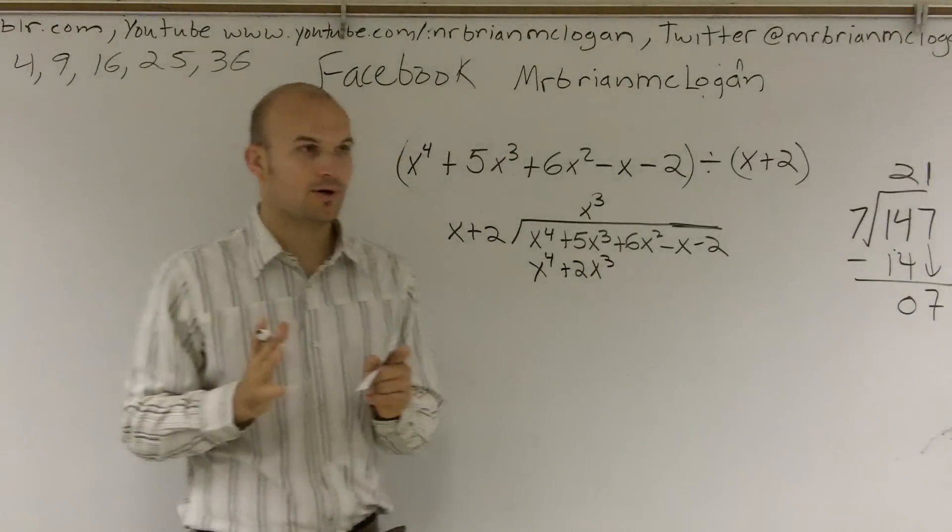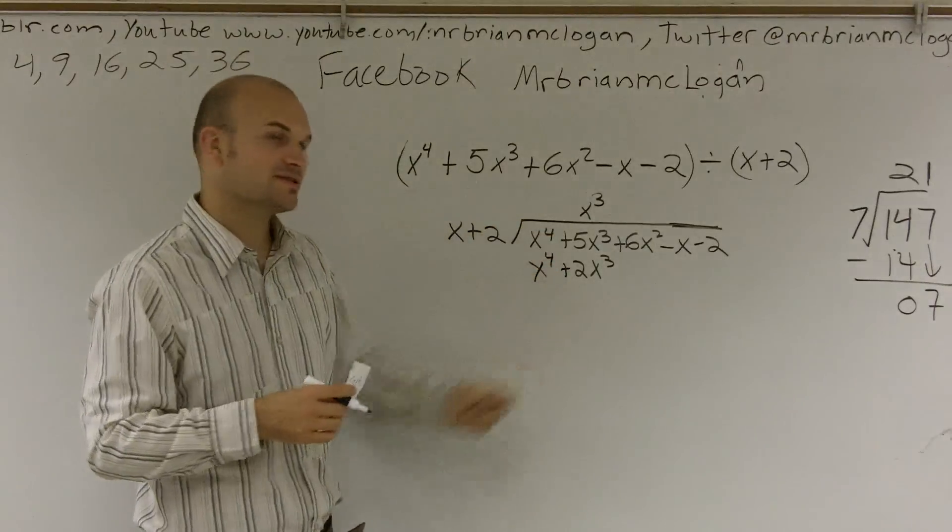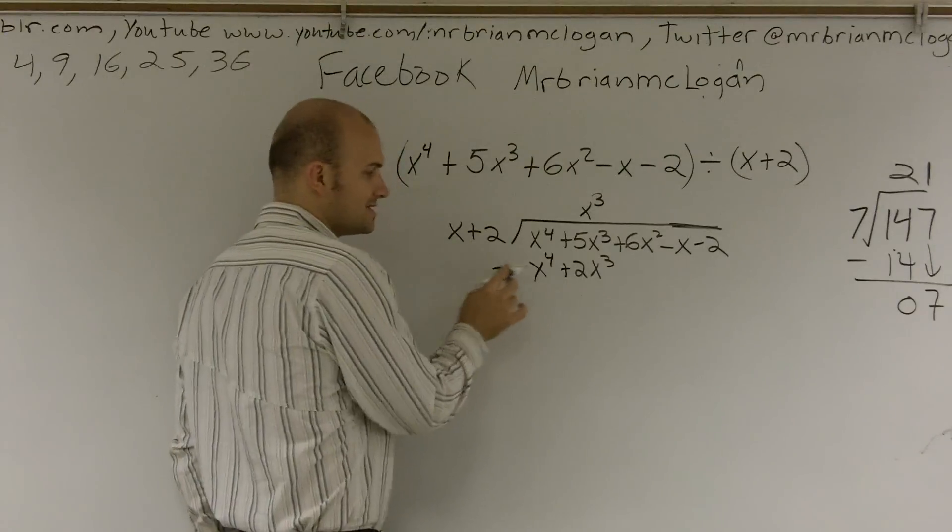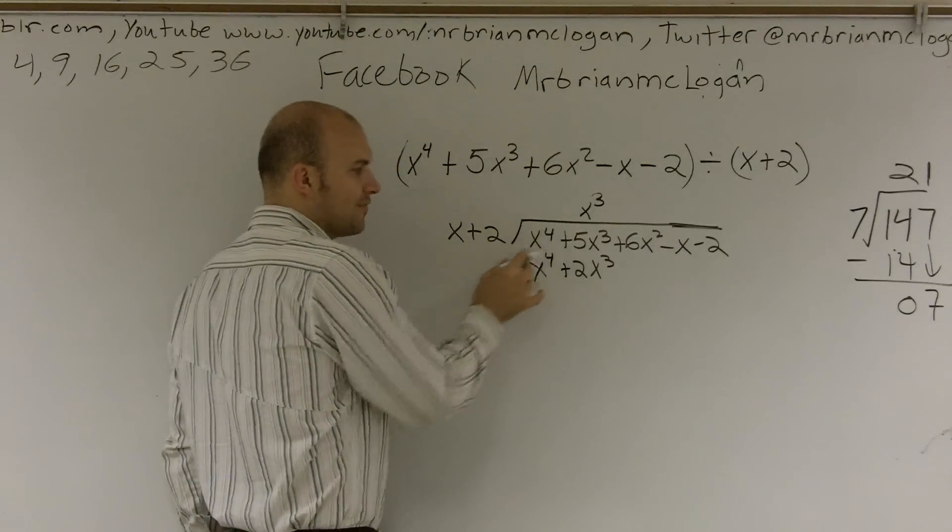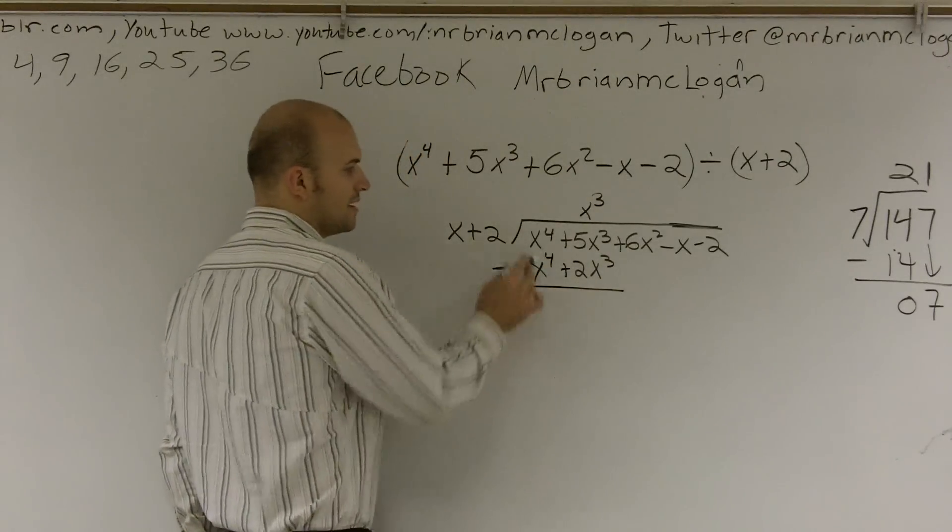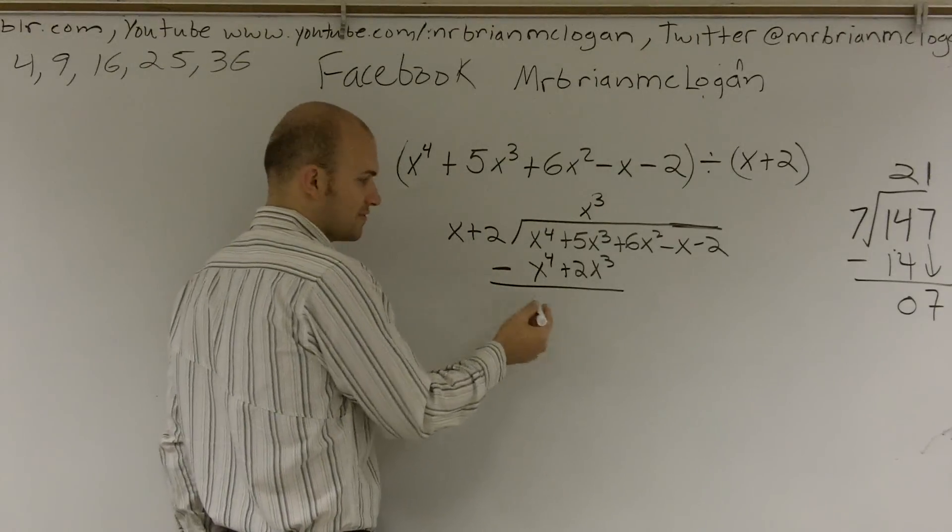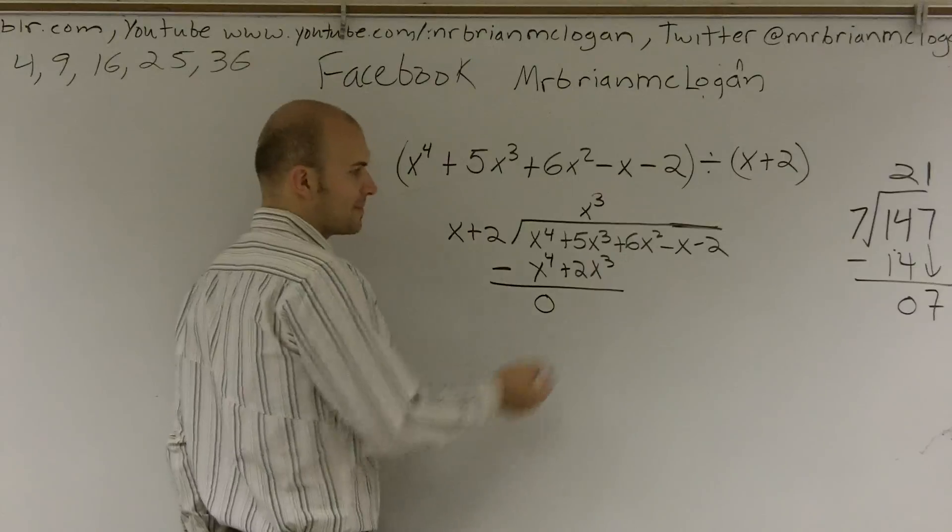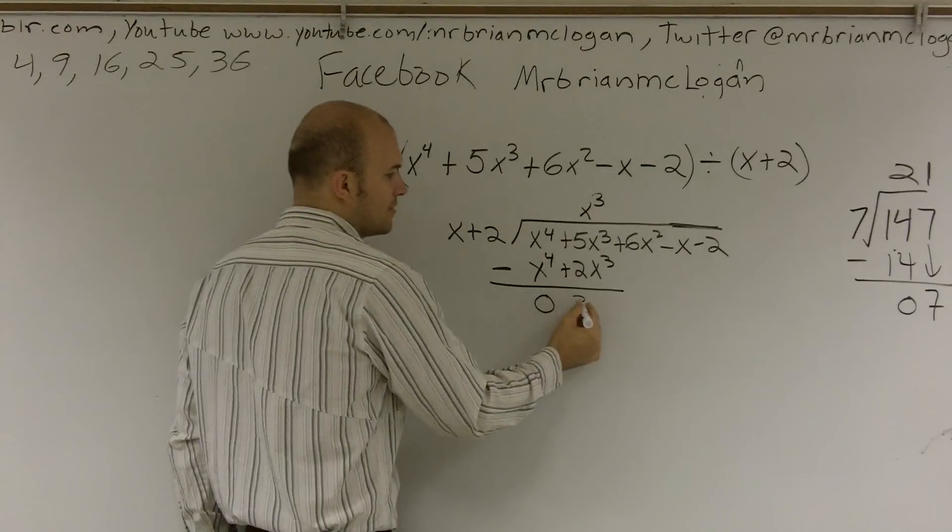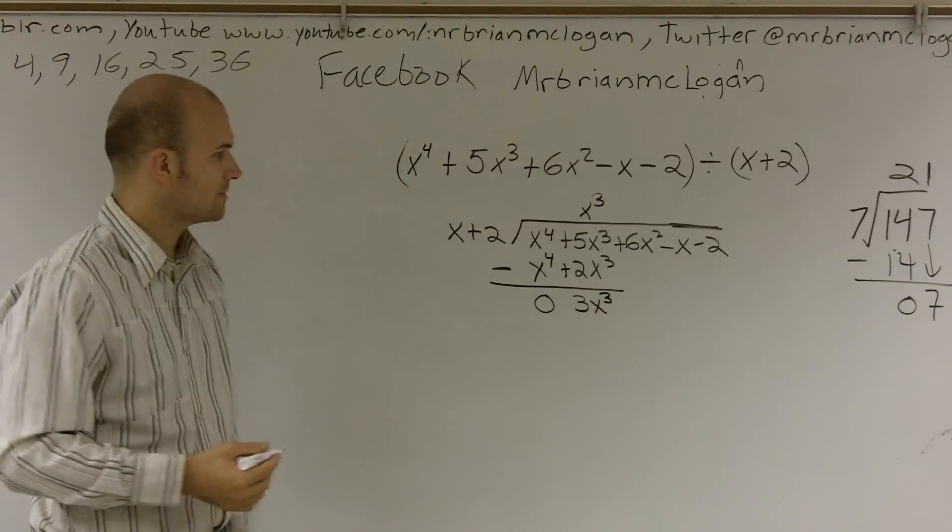Now, here's where a lot of people forget. Remember, we're subtracting our top row from our second row. You've got to make sure you subtract everything. So I'm going to put a nice little negative sign out here. It does not mean just a negative x to the 4th. It also means subtract 2x cubed. So when I drop my line, x to the 4th minus x to the 4th is obviously 0x to the 4th, right? And 0x to the 4th is just 0. So 5x cubed minus 2x cubed is going to give you 3x cubed. All right?